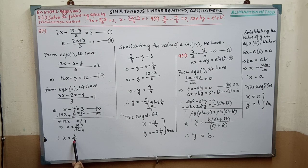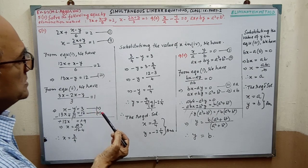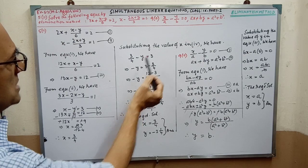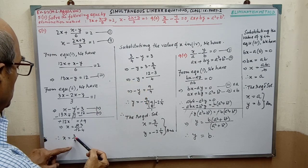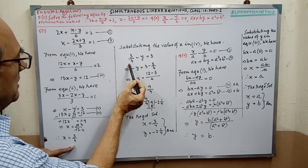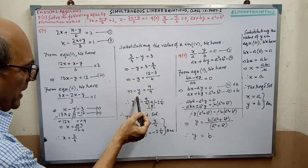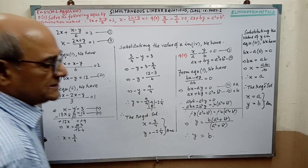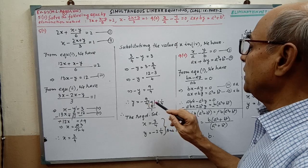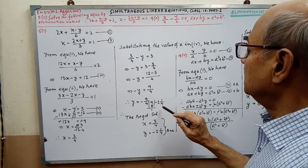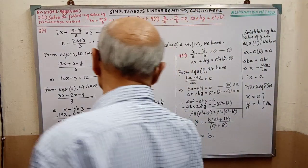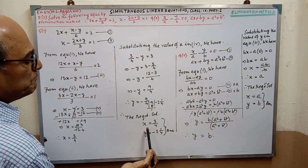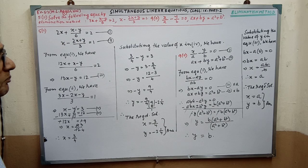This x equal to 3 by 4, we have to substitute between these two equations — any one of them. Substituting the value of x in equation 4, the value is 3 by 4. So in place of x, we are putting 3 by 4, giving minus y equal to 3. Then by simplifying, we are getting y equal to minus 9 by 4. Since it is an improper fraction, we have to convert it to mixed fraction. After conversion, we are getting minus 2 and 1 by 4. Therefore, the required solution is x equal to 3 by 4 and y equal to minus 2 and 1 by 4.